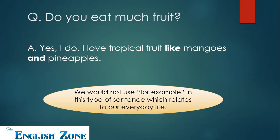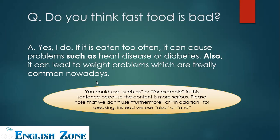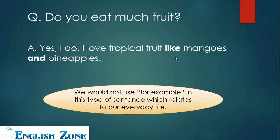Question: 'Do you eat much fruit?' Answer: 'Yes, I do. I love tropical fruit like mangoes and pineapples.' Here, two linking words are used: 'like' and 'and.' We would not use 'for example' in this type of sentence which relates to everyday life. In the previous question about fast food, we could use 'such as' or 'for example' because the content is more serious or factual. But if we're talking about something simple from everyday life, we use 'like' or 'and' — not 'for example' or 'such as.'